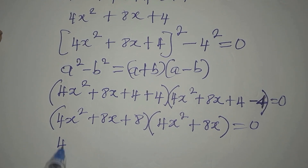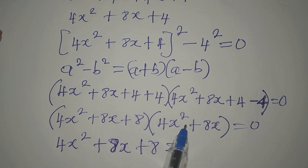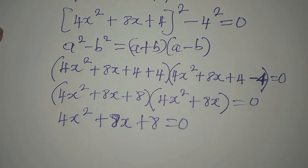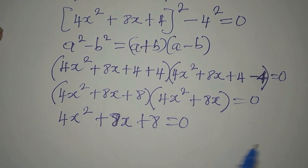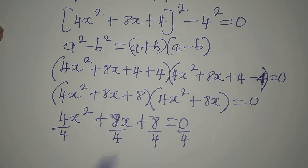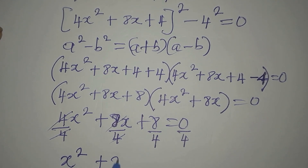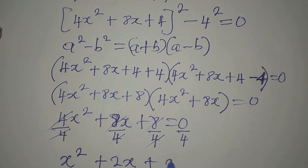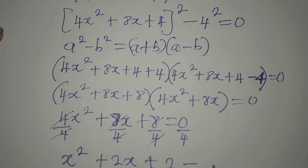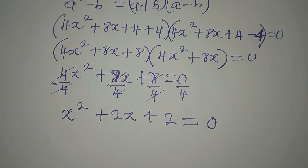By the zero product rule, either 4x² + 8x + 8 = 0, or the second factor equals zero. Let's deal with the first one. We can divide all terms by 4 since 4 is a factor of all of them, giving us x² + 2x + 2 = 0. Now we have a quadratic equation, which we'll solve using the quadratic formula.